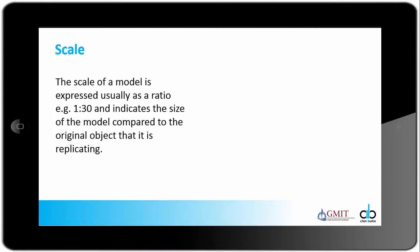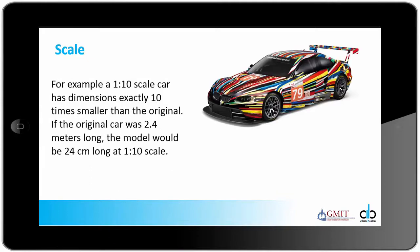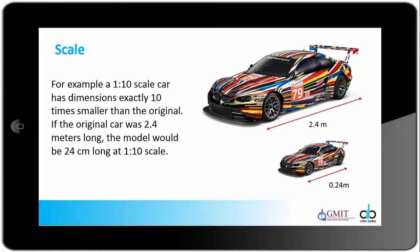The scale of a model is expressed usually as a ratio, for example 1 is to 30, and this indicates the size of the model compared to the original object that it is replicating. If we take this car here for example, a 1 is to 10 scale car has dimensions exactly 10 times smaller than the original. If the original car was 2.4 meters in length, the model would be 24 centimeters in length at a 1 is to 10 scale.